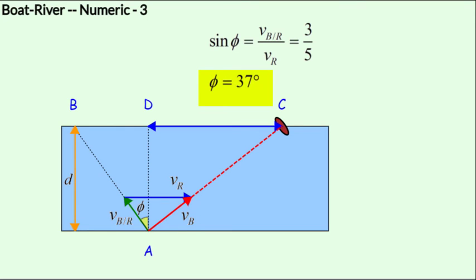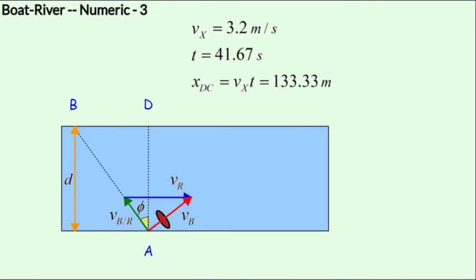Now substituting for vb with respect to r and vr, we obtain phi as 37 degrees. Substituting phi as 37 degrees, we obtain vx as 3.2 meters per second and the time t as 41.67 seconds. Multiplying these, we get the drift dc as 133.33 meters.